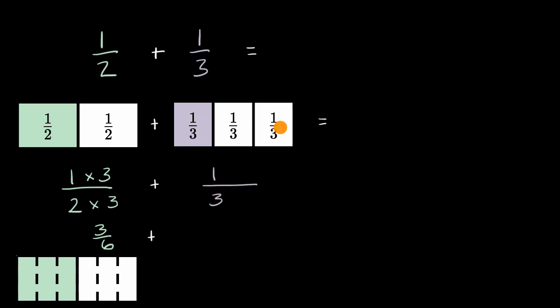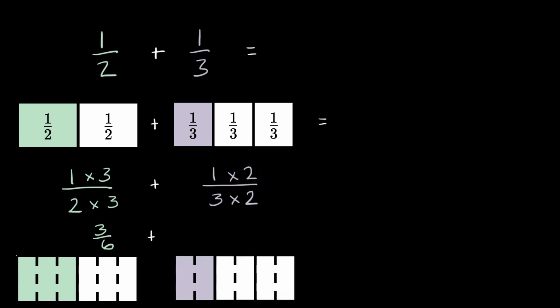I would want to take each of these thirds and make them into two sections. So, to go from thirds to sixths, I'd multiply the denominator by two, but I'd also be multiplying the numerator by two. And to see why that makes sense, notice...